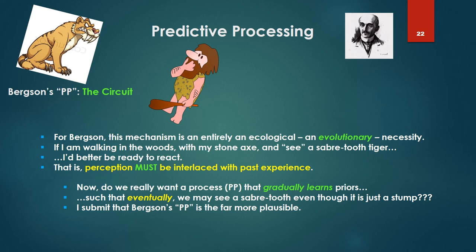All perception is already memory. The fly buzzing by is already memory in the first place. Remember, it's a specification of past states of the field or a portion of the past transformation of the field. And there's nothing preventing in the 4D holographic field aspects of the past to be mingled in. For Bergson, this mechanism is an entirely ecological and evolutionary necessity. If I'm walking in the woods with my stone axe or club and I see a saber-toothed tiger, I'd better be ready to react. That is, perception must be interlaced with past experience. It's just ecologically necessary. It's evolutionarily necessary. But we must ask, do I really want a process like PP that gradually learns priors, such that eventually we may see a saber-tooth, even though it is just a stump, a tree stump. I submit that Bergson's predictive processing is actually more plausible.